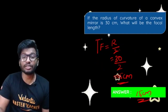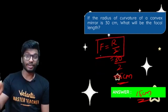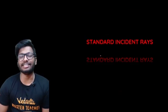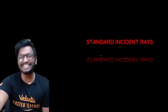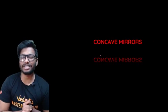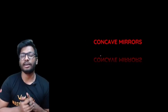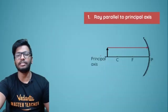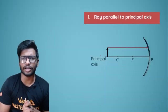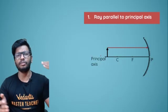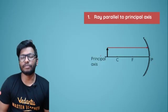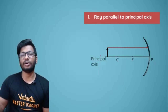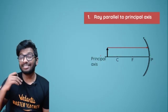Let's get into today's session — the standard incident ray — starting with concave mirrors and then convex mirrors. First of all, an incident ray is a ray of light that comes in and hits the reflective surface. That is what is called an incident ray.